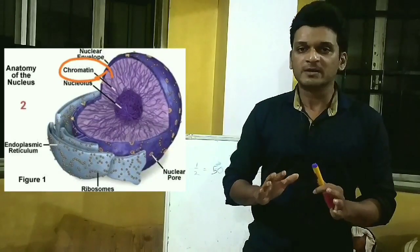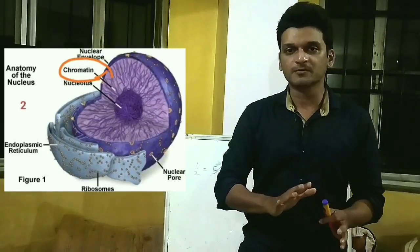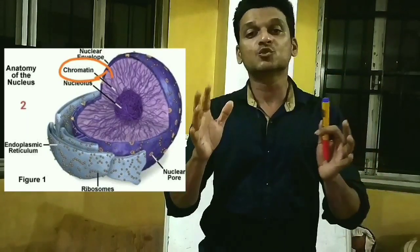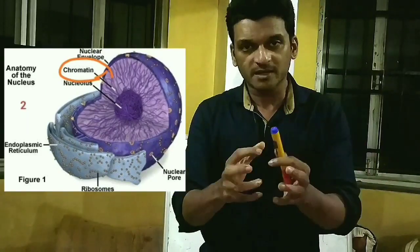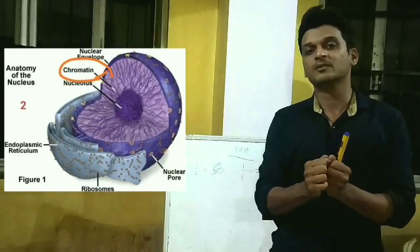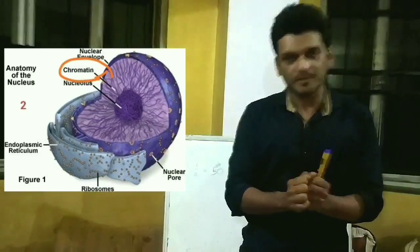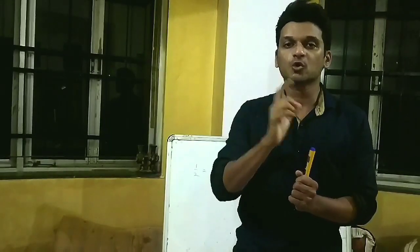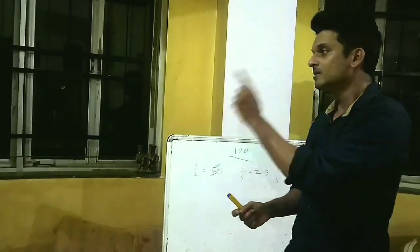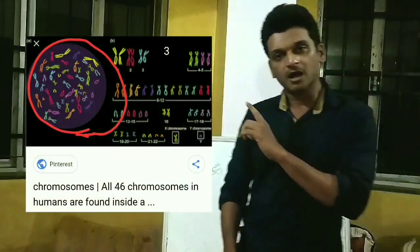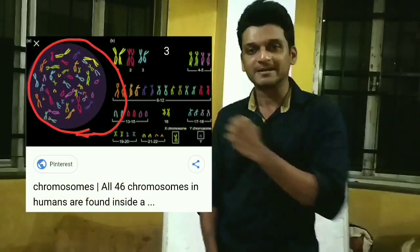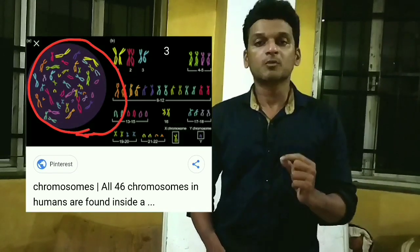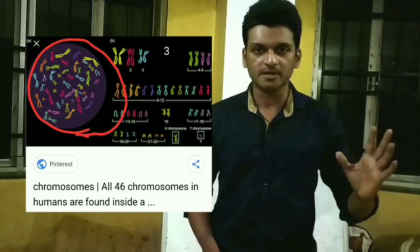Inside the nucleus you can see there is a network of fiber. This network of fiber is called chromatin fiber. Generally, chromatin fibers are not visible in ordinary ways. But when the cell is ready for cell division, this chromatin fiber starts coming together — this is called condensation of chromatin fiber — and by condensation they form thick structures, which are called chromosomes. In the diagram, you can see a nucleus with various chromosomes present.